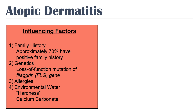Having allergies is also a risk factor — because of the associations within the atopic triad, if you have allergies you're more likely to develop atopic dermatitis. A fourth, quite interesting risk factor is environmental water sources: evidence suggests that water hardness — specifically calcium carbonate levels — can worsen or trigger atopic dermatitis.